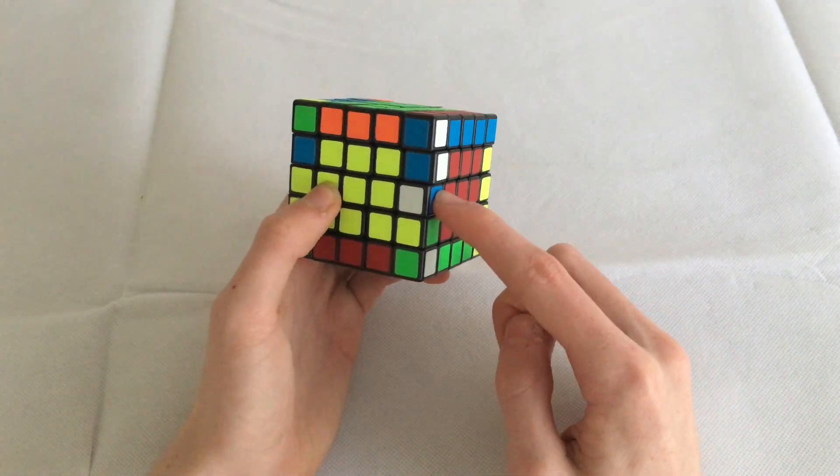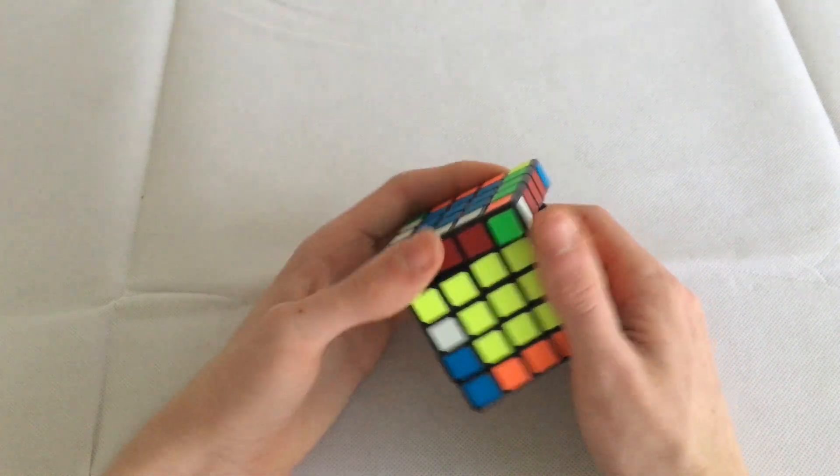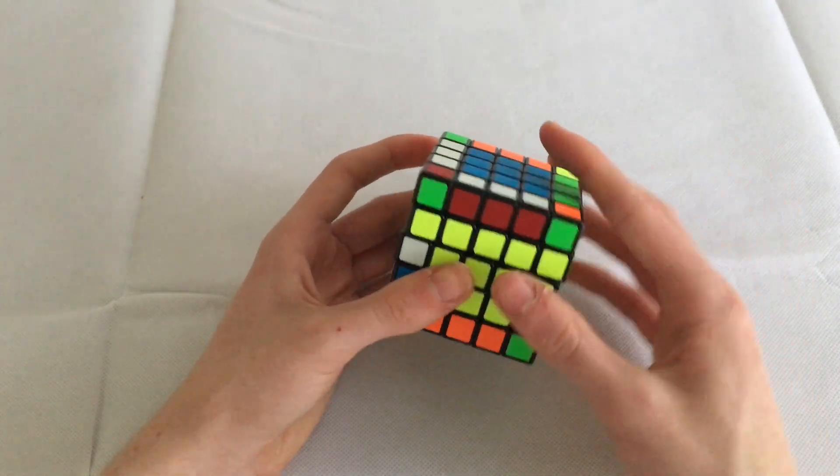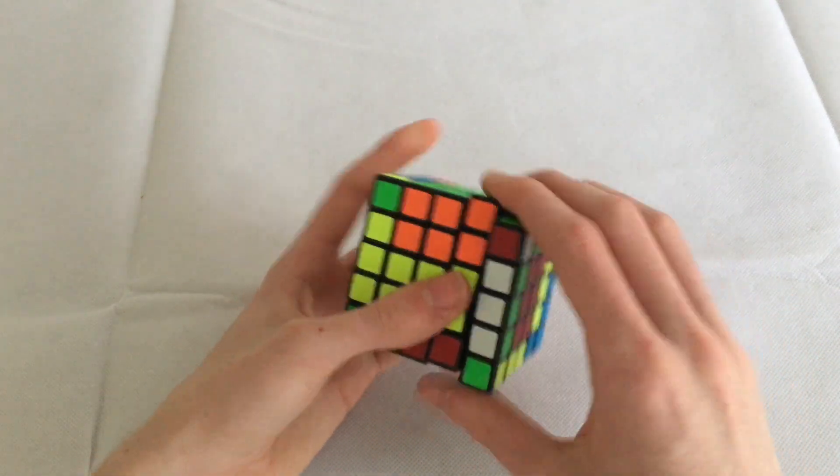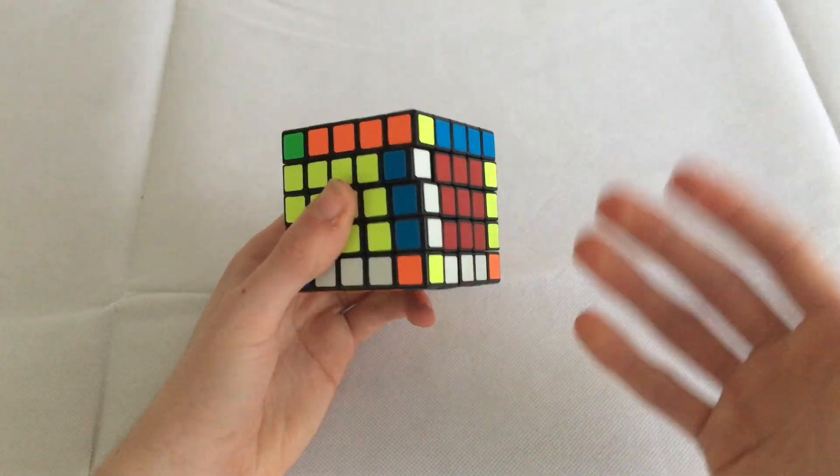And slice this piece into here. Now the reason why you're going to do this is because if you perform this algorithm here, you're going to end up with double parity and you don't want double parity. So if we slice like this, we can actually, when we perform our algorithm after, have no parity and all the edges then are solved.